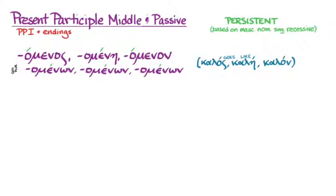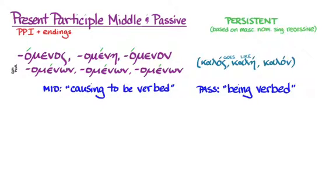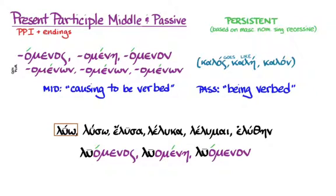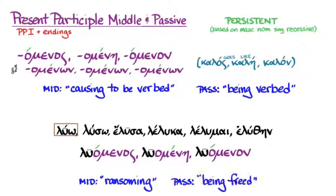The default translation, if the word you're looking at is a present participle middle, is 'causing to be verbed.' In the passive, it is 'being verbed.' You'll use the same clues to decide whether a participle is middle or passive as you do with the indicative, subjunctive, optative, and infinitive — you'll look for direct objects or genitives of agent, and think about the logic of the two different meanings in the sentence. So if we want to form a present participle middle or passive from luo, we go to the first principal part and put our new adjective endings on the stem lu, and we get luomenos, luomene, luomenon — meaning either 'ransoming' in the middle or 'being freed' in the passive.